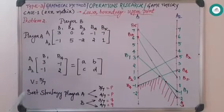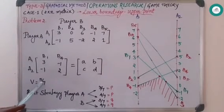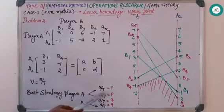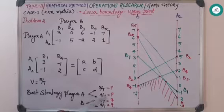On simplification we get the value of game is equal to 5 by 7, and strategies for Player A is 3 by 7, 4 by 7, and Player B has 3 by 7 and again 4 by 7.